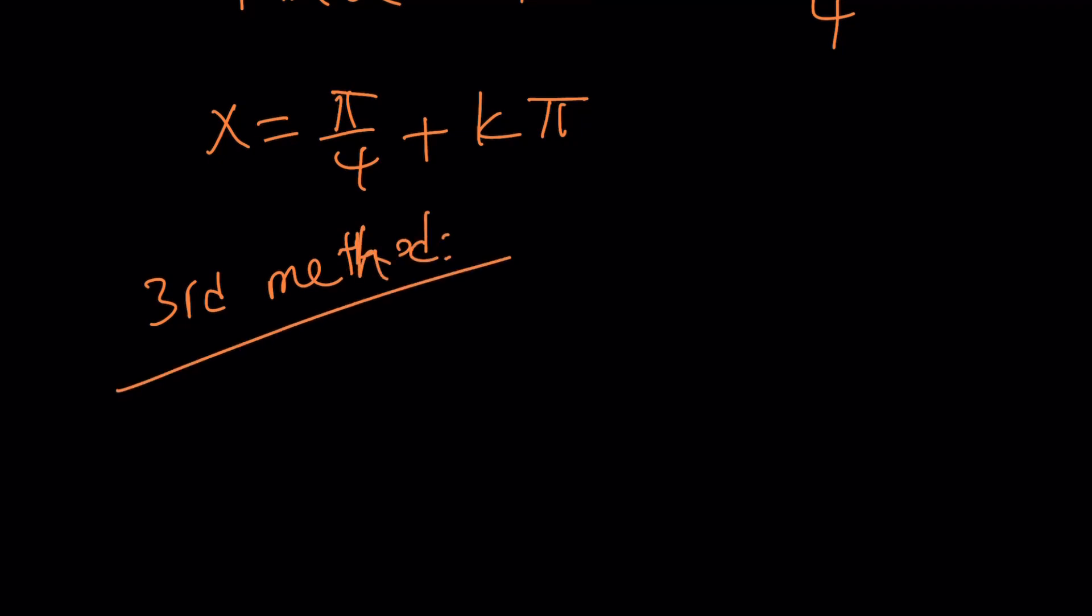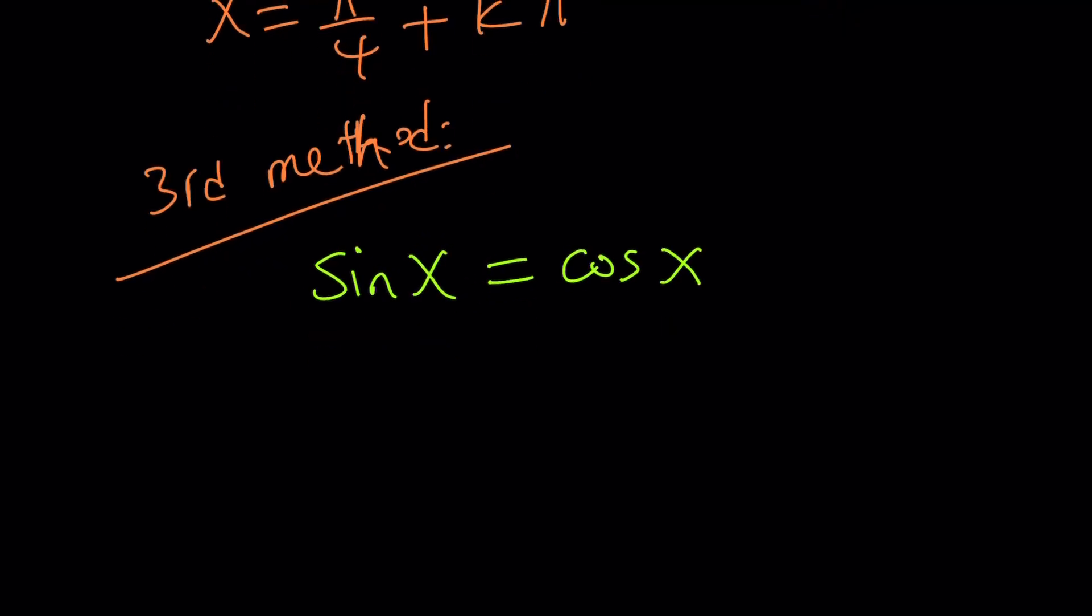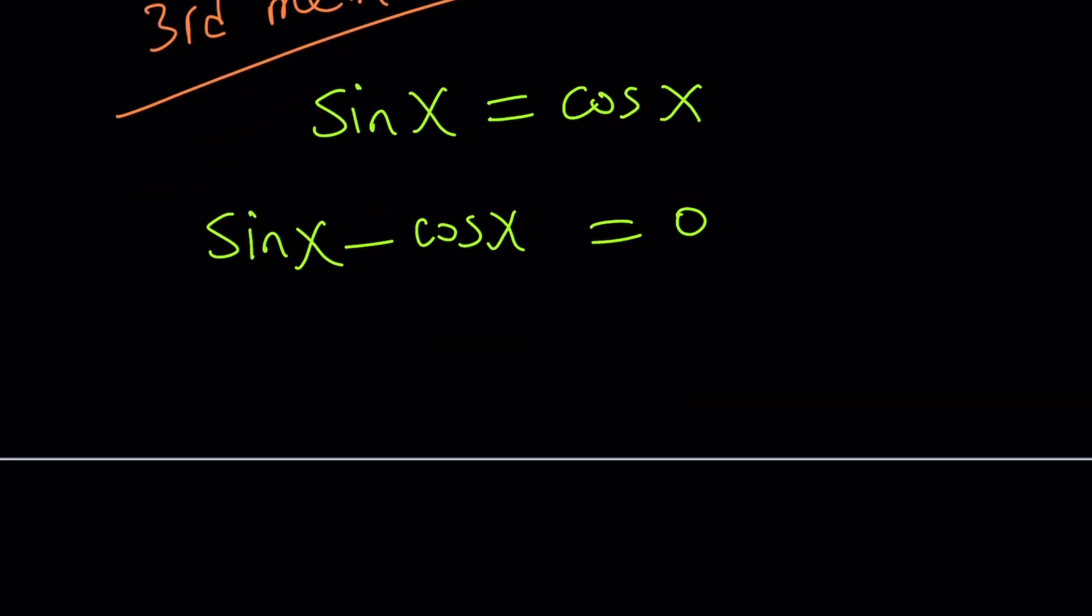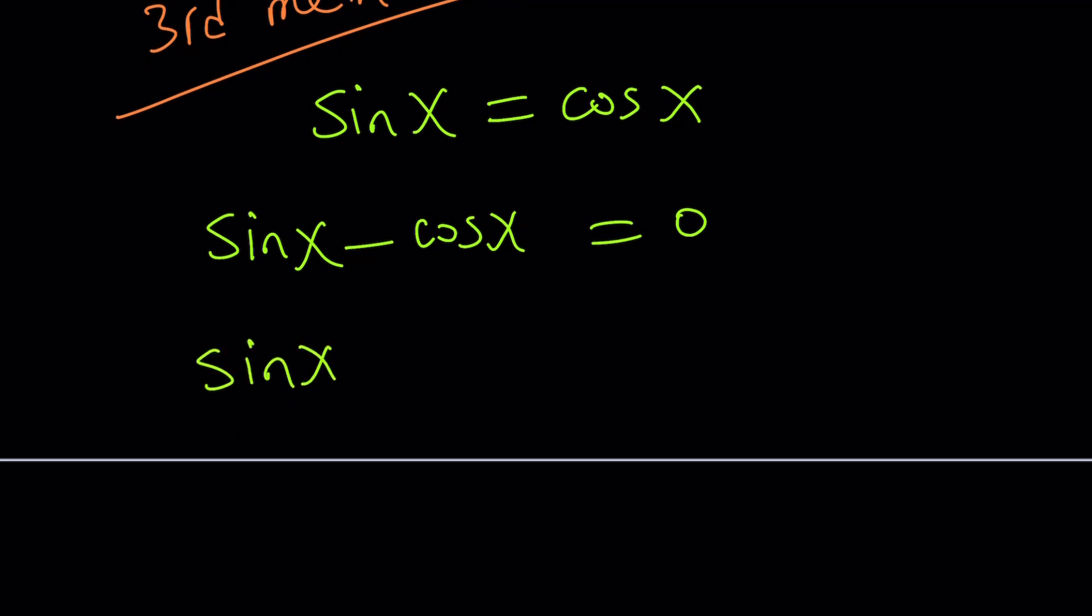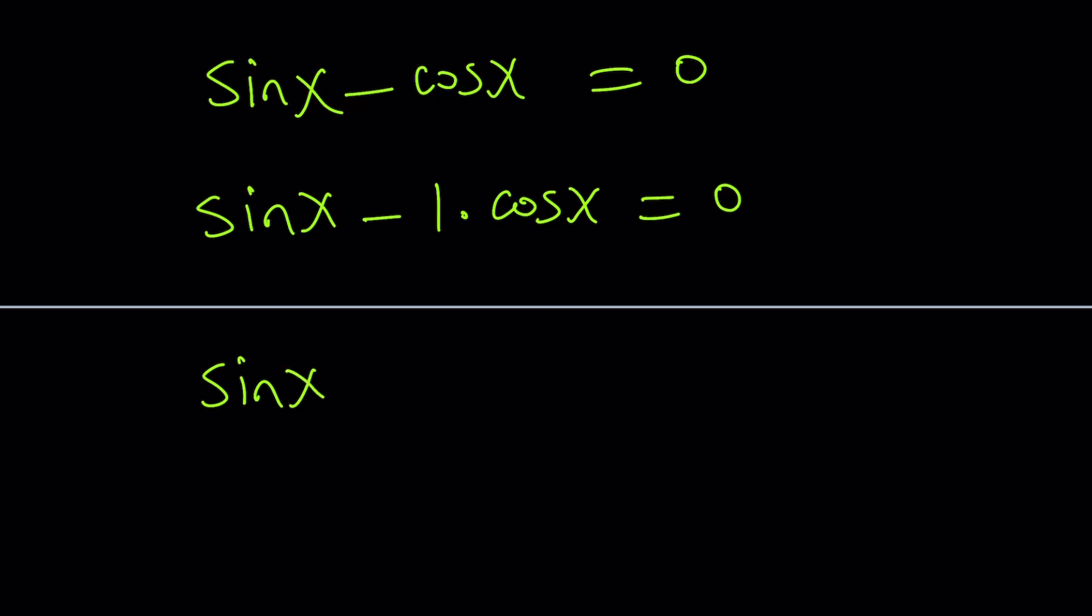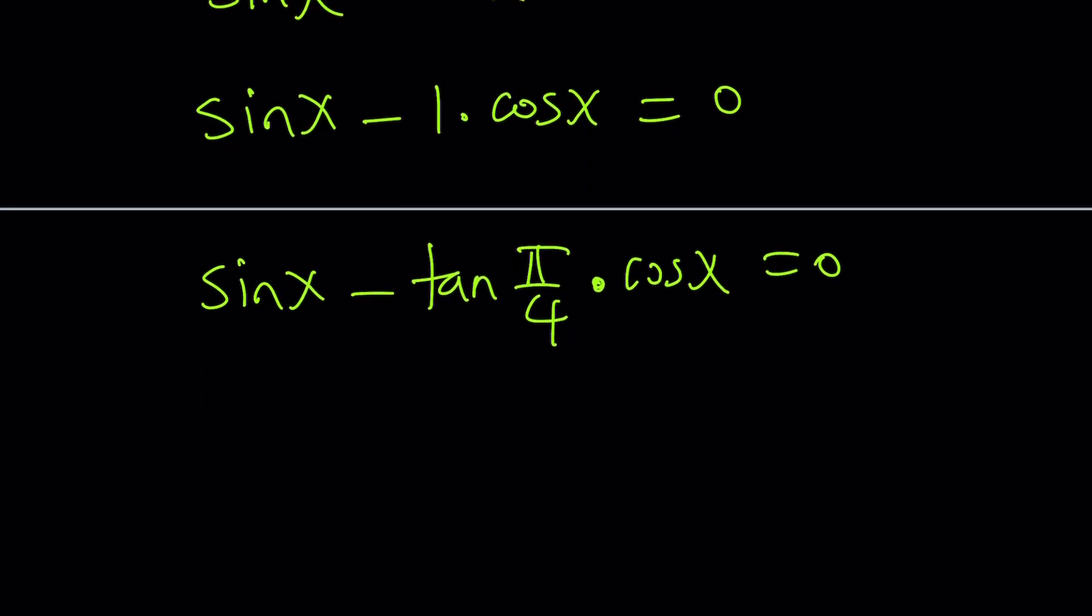Here's the third method. We have sin x equals cos x. I want to put both on the same side, so let's subtract cos x and set it equal to zero. Then I want to write cos x as 1 times cos x. I'm going to replace the 1 with tan(π/4) because tan(π/4) is 1. The motivation is I'm going to turn this into the sine or cosine of a difference or sum. So sin x, and tan(π/4) can be written as sin(π/4)/cos(π/4), multiplied by cos x equals zero.